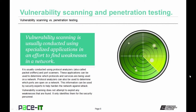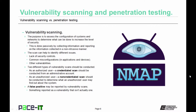This information can be used by security experts to help harden the network against attacks. Vulnerability scanning does not attempt to exploit any weaknesses that are found — it only identifies them for the security personnel, who will then take care of those vulnerabilities. The purpose of vulnerability scanning is to assess the configuration of systems and networks to determine what can be done to increase the level of security. This is done by passively collecting information and reporting on it in a non-intrusive manner.